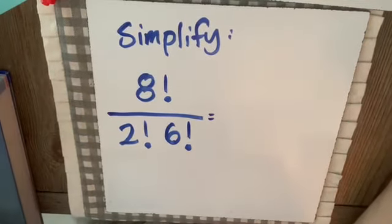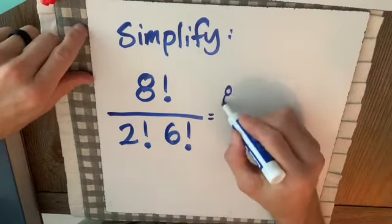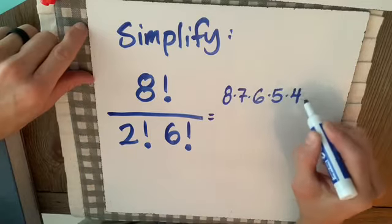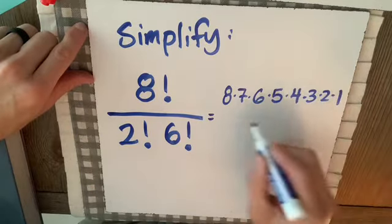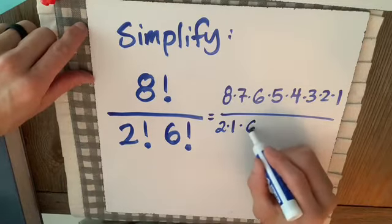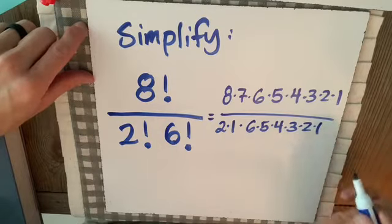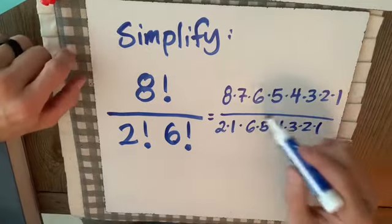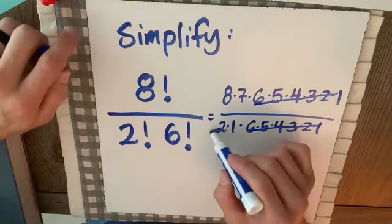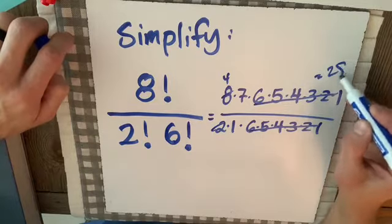If we're asked to simplify the fraction with 8 factorial on top and 2 factorial times 6 factorial on the denominator, of course we could write it all out: 8 times 7 times 6 times 5 times 4 times 3 times 2 times 1, divided by 2 times 1 times 6 times 5 times 4 times 3 times 2 times 1. Because these are multiplication, terms will cancel — 2 cancels with 8 to give 4, times 7 is 28.